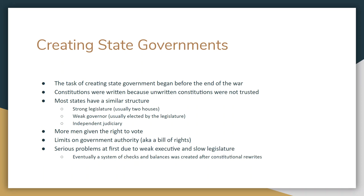Most states had a similar structure: a strong legislature, usually with two houses; a weak governor, typically elected annually by the legislature, not by the people; and an independent judiciary. More men were given the right to vote — that's called enfranchisement — by lowering how much property you had to own to vote. There were going to be limits on government authority, a bill of rights: freedom of press, freedom of speech, freedom of religion, the right to a fair trial. You had to consent to taxation.